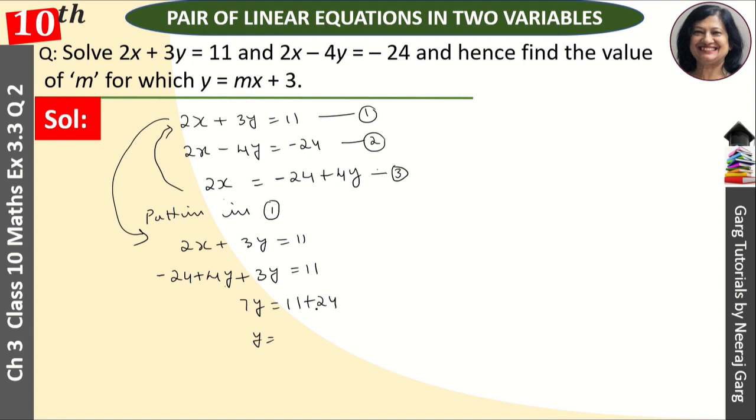Then y is equal to kitna aa gaya? Yeh aa gaya 35 upon 7. Matlab ki yeh aa gaya hamara y is equal to 5.